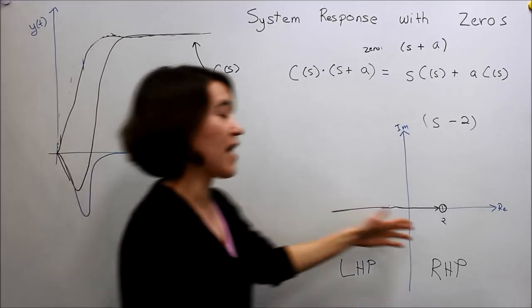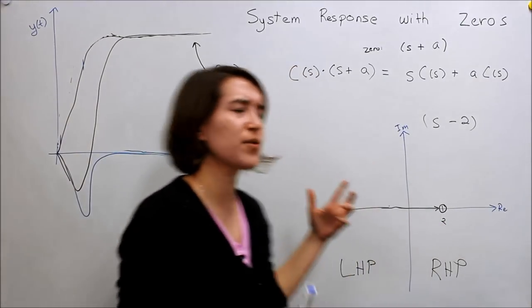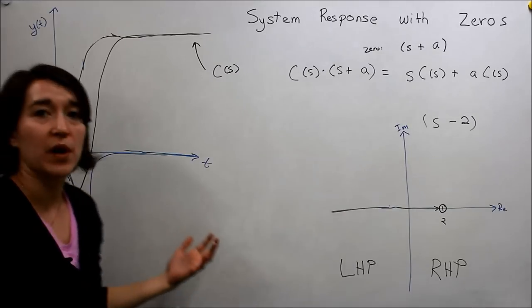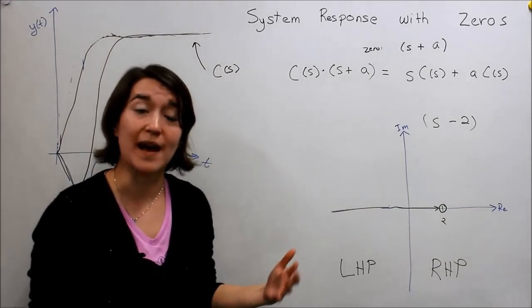So some systems do work like that. And they have natural right half plane zeros. And they can be troublesome in control, especially if you have some sort of operating limits. Say you can't go negative here because some other part of your system will blow up or can't deal with that.